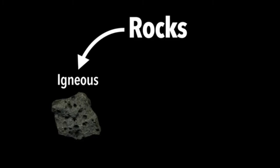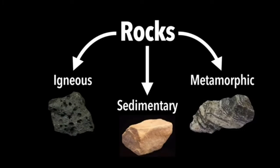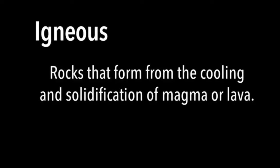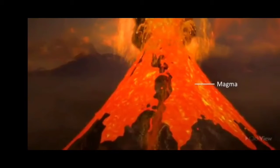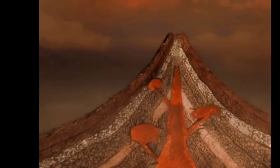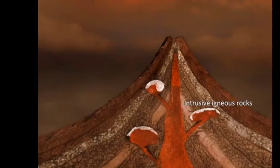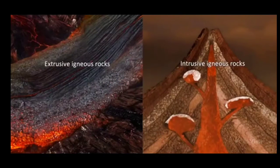They are igneous rocks, sedimentary rocks, and metamorphic rocks. Now let's study about igneous rocks. The word igneous is taken from the Greek word meaning fire. These rocks are formed when hot liquid magma from inside the earth cools and becomes solid. When magma cools below the ground, it is called an intrusive igneous rock. When magma cools on the surface, it is called extrusive igneous rocks.